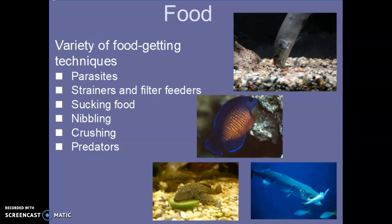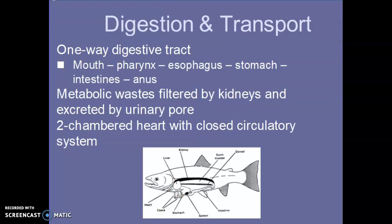Their mouthparts are actually evolutionarily designed for the kind of food that they eat. Some fish are parasites, some strain or filter feed, some nibble, some crush, and some are predators. I'm sure you've seen this variety of fish either in the wild or at a pet store. Depending on what they have adapted to is what their mouth looks like and what they eat.